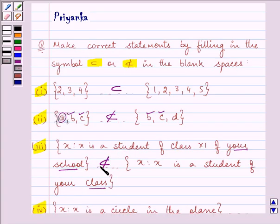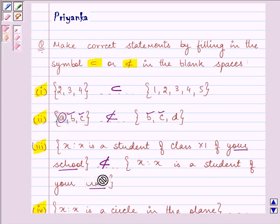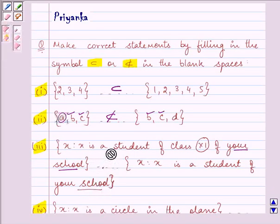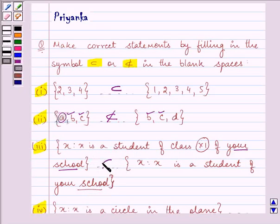You need to think about each and everything and then tell whether they are the subset or not. But if I change this from class to school, then what will be your answer? All the students of class 11 are students of your school, isn't it? So the answer will get changed to that it is a subset of the other set.